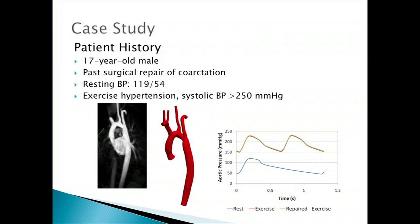Here's a clinical example: a 17-year-old whose coarctation had already been repaired had a normal resting blood pressure but his blood pressure exceeded 250 during exercise. His anatomy showed small residual narrowings, and the question was whether fixing them would solve the problem. The simulation showed rest, exercise, and exercise with repair — and there was no difference at all. We technically saved him from an operation.